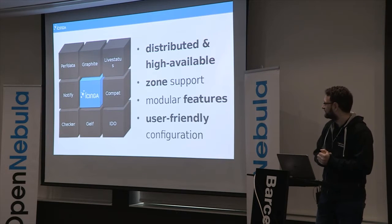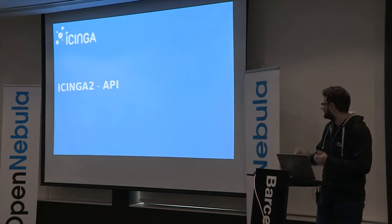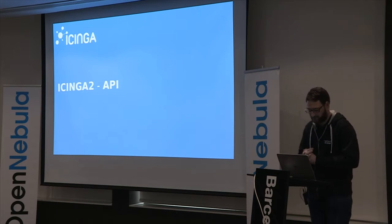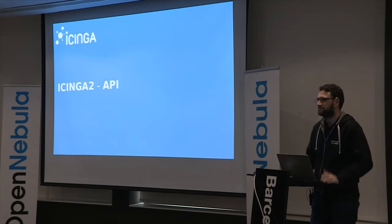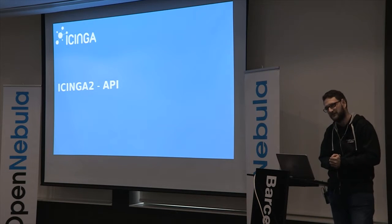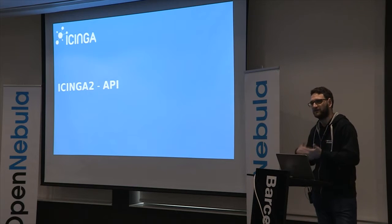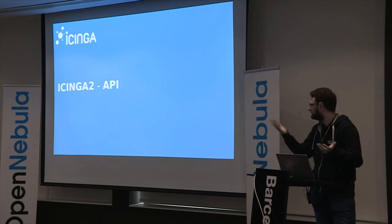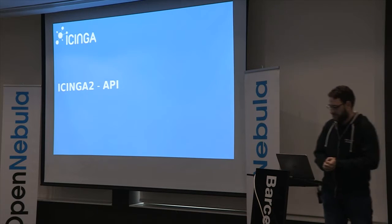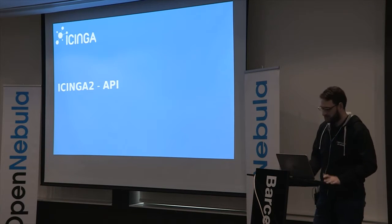I said I want to talk about the API, and the API is the next big thing that is really great in Icinga. With the API I can modify and create the configuration of Icinga. This is the key part to integrate the monitoring configuration with other tools — later we'll see an example of how to integrate it with OpenNebula. How do I enable the API in Icinga 2? I just create an API user config object.